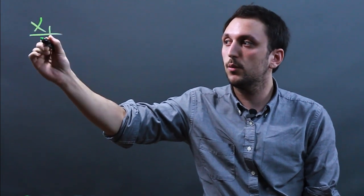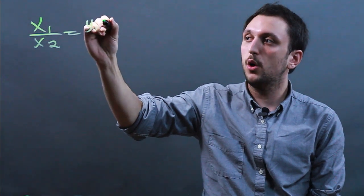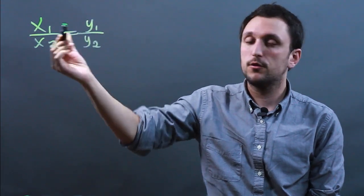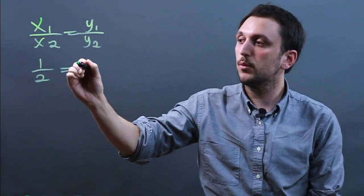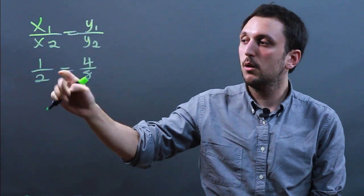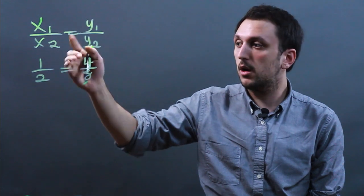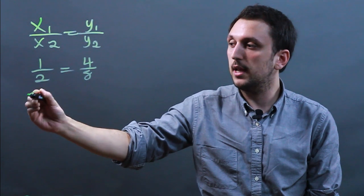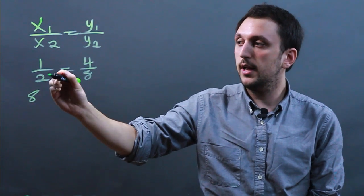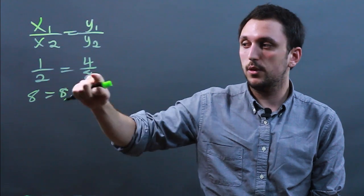A direct proportion is written as such: x1 over x2 equals y1 over y2. So if we say 1 over 2 equals 4 over 8, these are directly proportional. The way you know that they are is if you cross multiply — 1 times 8 is 8, and 2 times 4 equals 8. So they are proportional.